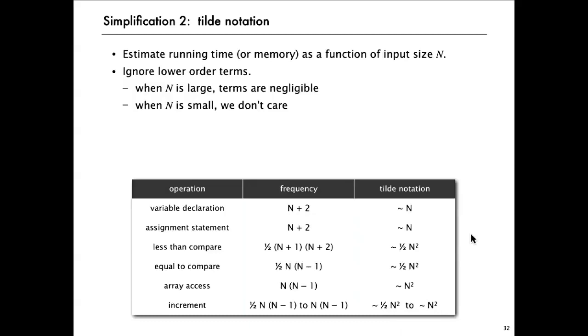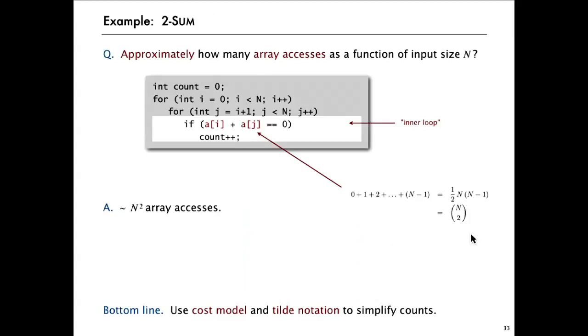Again, when N is large, the terms are negligible. When N is really small, they're not negligible. But we don't really care because we're trying to estimate running times for large N and running times for small N are going to be small no matter what. So now we're using both the cost model and the tilde notation and then we can simply say that this program uses tilde N squared array accesses and have implicit the hypothesis that we think the running time is going to be tilde a constant times N squared.